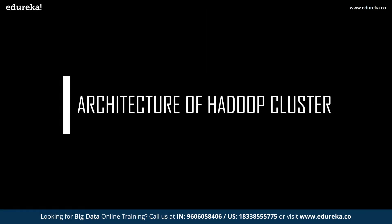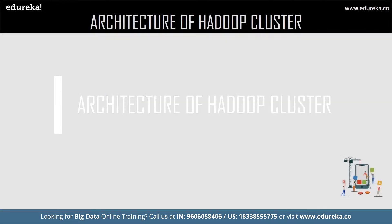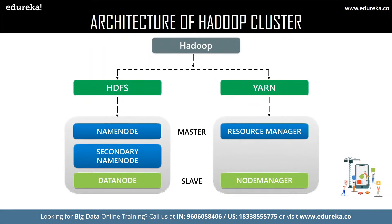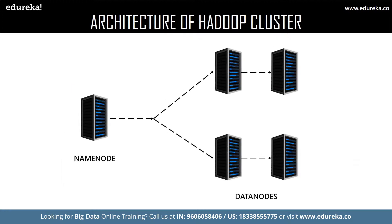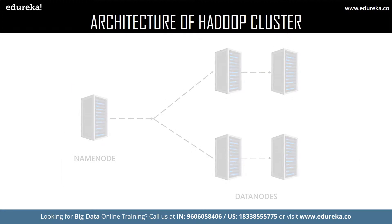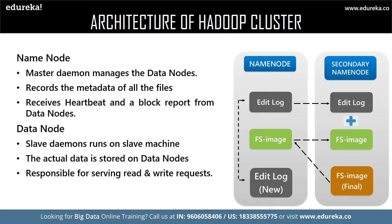Now that we have gone through facts on Facebook's Hadoop cluster, let us move on to the Hadoop architecture. The architecture of Hadoop consists of the following components: HDFS and YARN. Let us begin with HDFS. HDFS consists of the following components: the Name Node, Secondary Name Node, and Data Node. Let us discuss each one of them in detail.